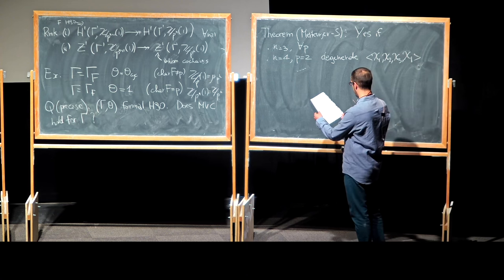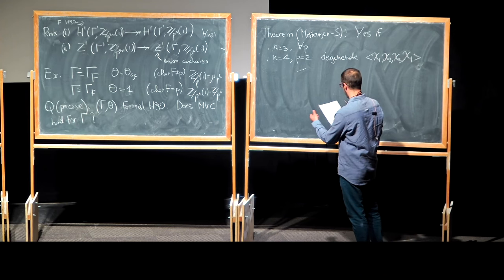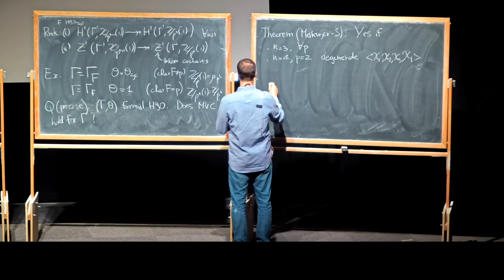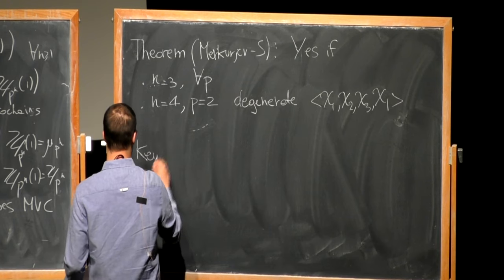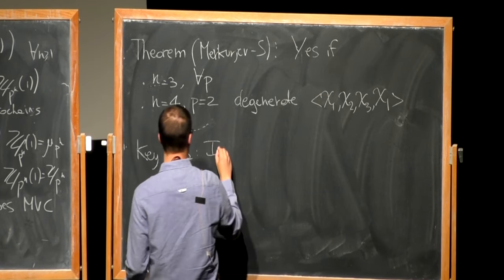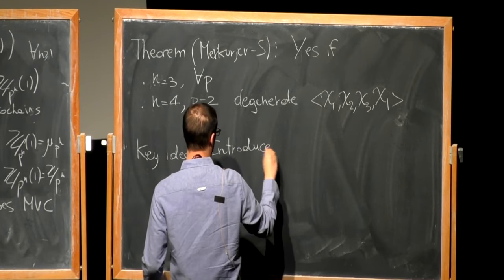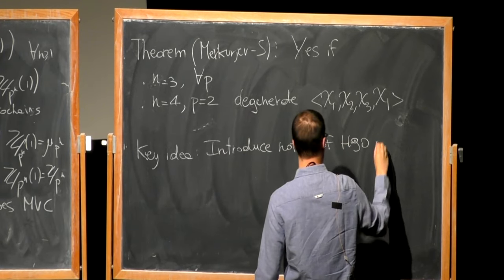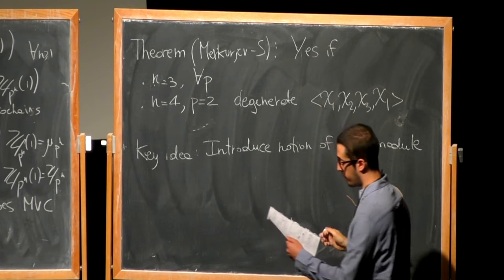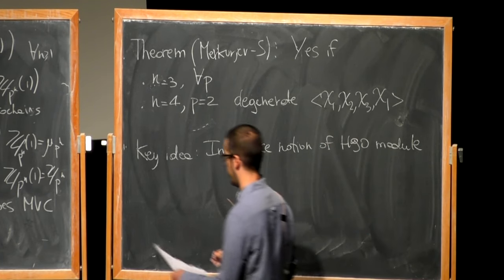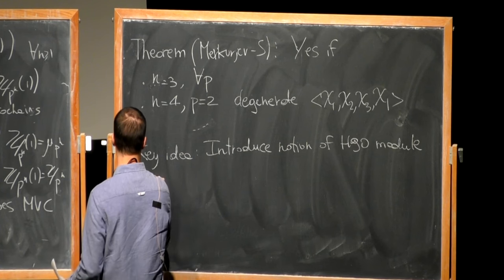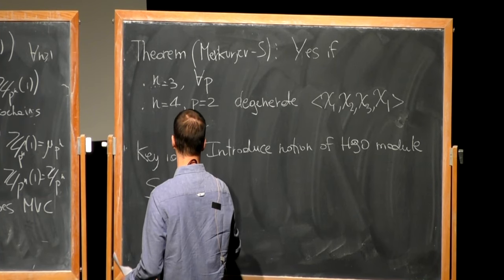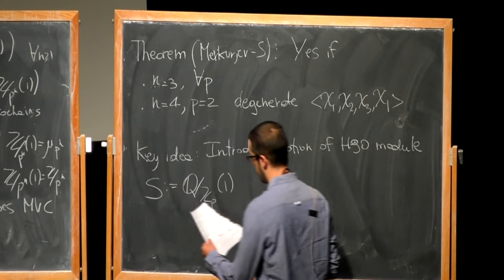Something about the proof: the key idea is to introduce a new notion of Hilbert 90 module. Let me explain this next. I will consider S = Q/Z_P(1). As an abelian group, S is just Q_P/Z_P — this should be the localization at P — so it's a P-power torsion abelian group. And Γ acts on S via θ, then lets Z_P^× act on Q/Z_P by scalar multiplication.